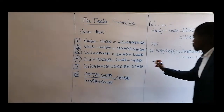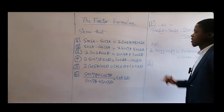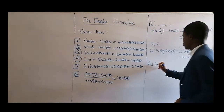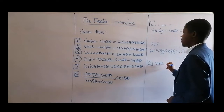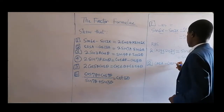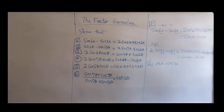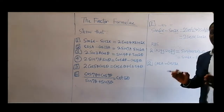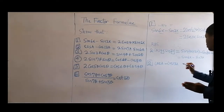Number two. We have cos(a) minus cos(13a). When you have a subtraction of cosines — a difference of cosines — it is going to be negative, equal to minus 2 sine of the sum of the functions.